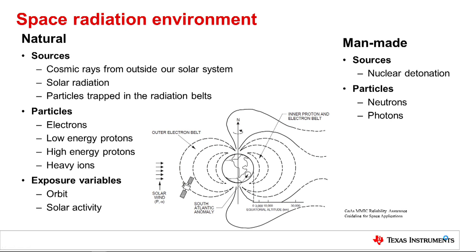There are two main sources of radiation in space: natural and man-made. The natural sources are cosmic radiation from outside our solar system, solar radiation, and particles trapped in the radiation belts. The particles in the natural environment are electrons, protons, and heavy ions. The amount of exposure a satellite will see over a given period of time is dependent on orbit and solar activity. The man-made source is nuclear detonation, and the particles of interest are neutrons and photons.